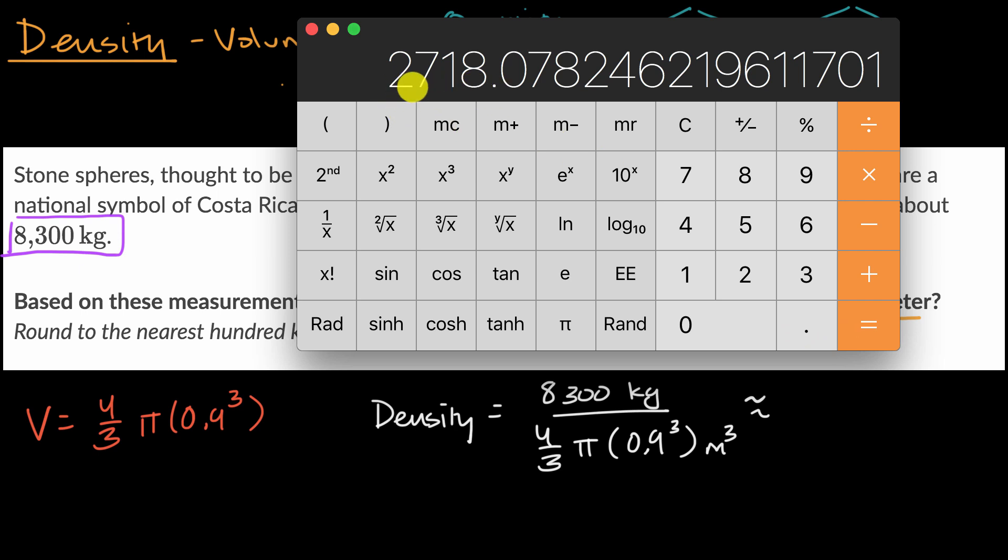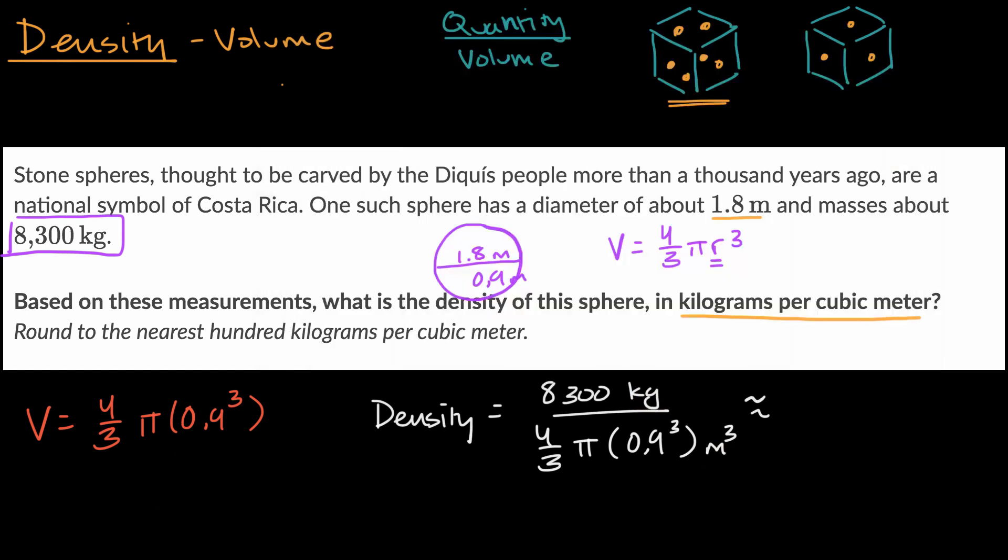We want to round to the nearest hundred kilograms. So approximately 2,700 kilograms per cubic meter. And we are done.